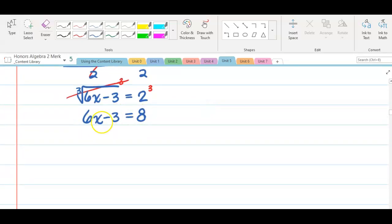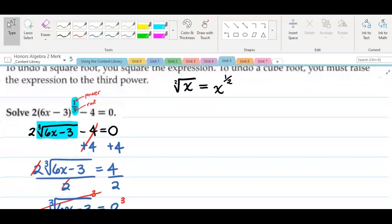We're left with 6x minus 3 equals 8, 2 to the third power. And now we just have a linear equation that we need to isolate x. We need to add 3 to both sides. Divide by 6 on both sides. X equals 11 over 6. And of course, we need to check this solution with our original problem.